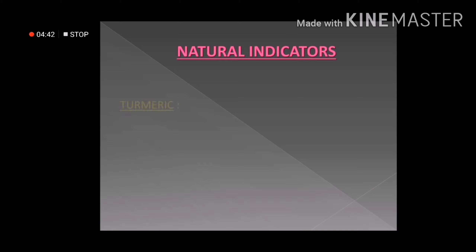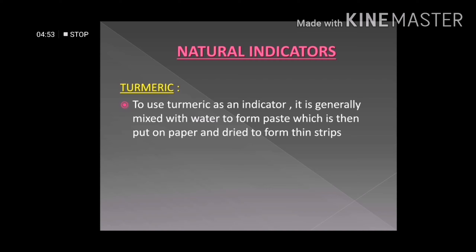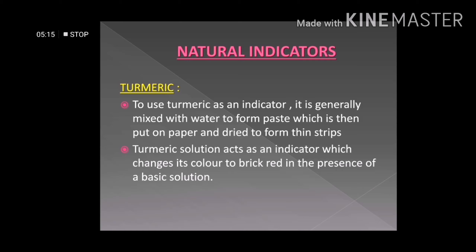Another important natural indicator is turmeric, which is widely used in our kitchens. To use it as an indicator, we mix turmeric with water to prepare a paste, apply the paste on paper, let it dry, and cut it into thin strips. These strips can then be used as indicators. Turmeric solution changes its color to brick red in the presence of a basic solution.